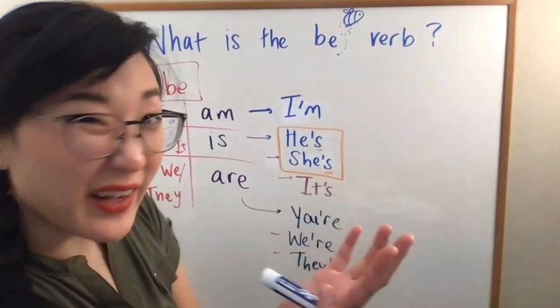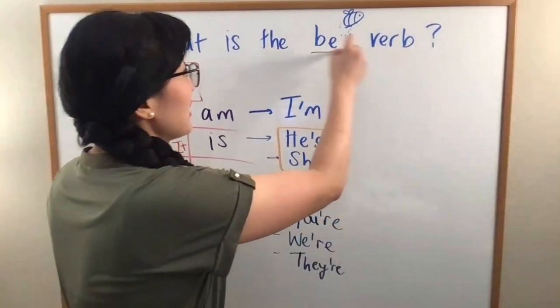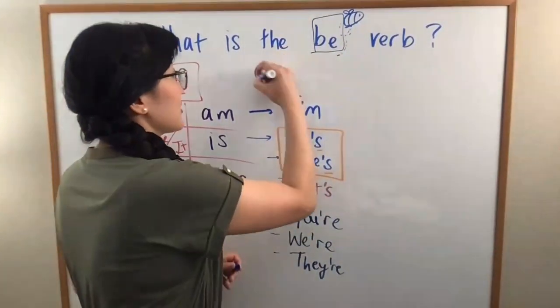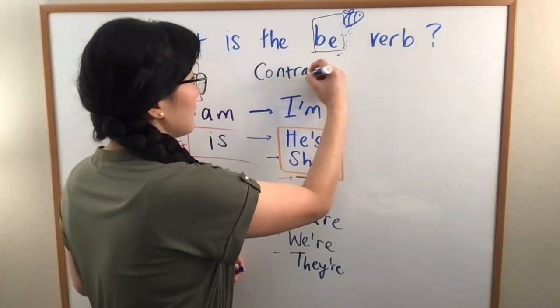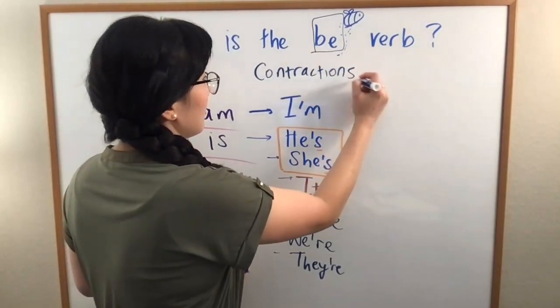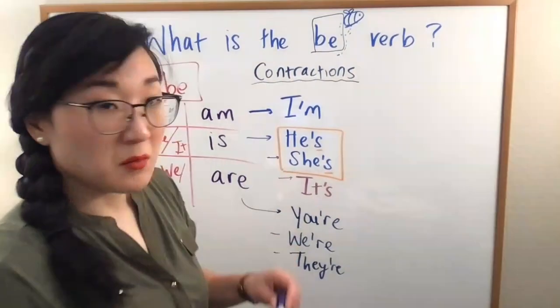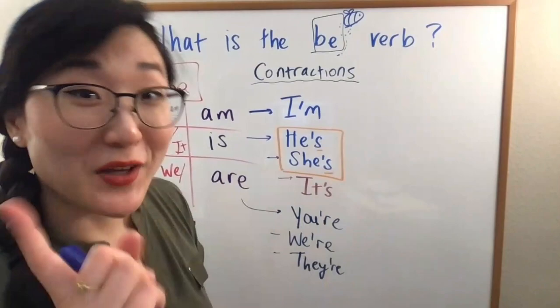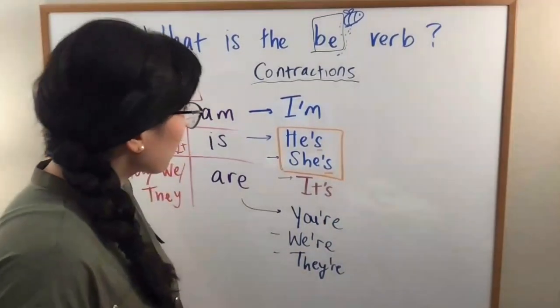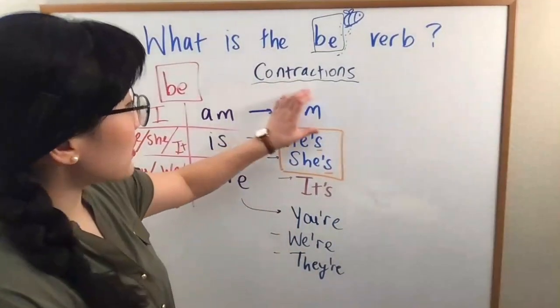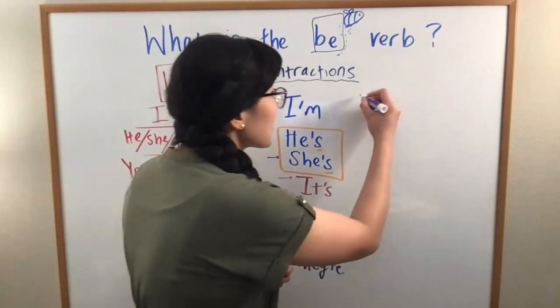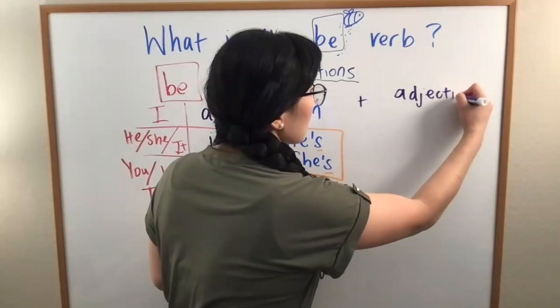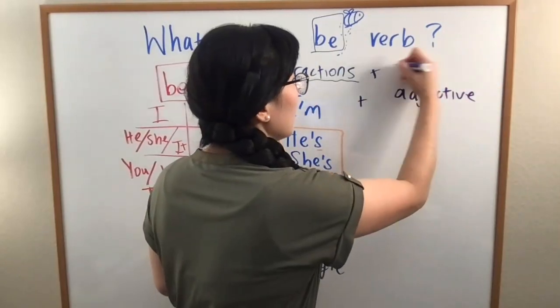Okay. So, teacher Caroline. So, this is the magical BE verb and how we change it into contractions. But, okay. How do I use this? Good question. So, usually with this BE verb, we have the BE verb plus an adjective or a noun.